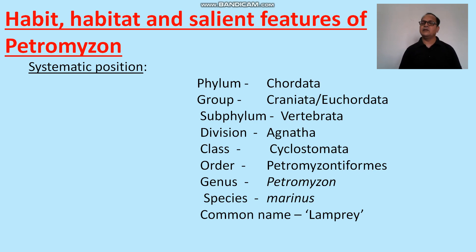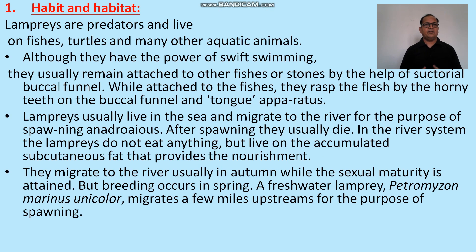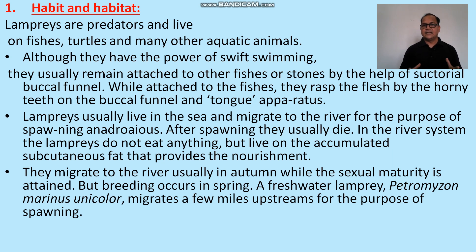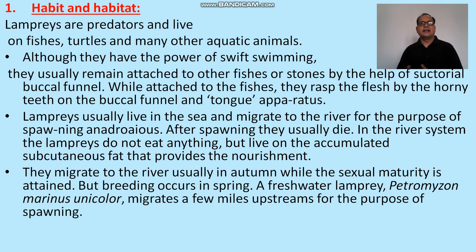Species marinus, common name lamprey. Lampreys are predators and live on fishes, turtles, and many other aquatic animals. Although they have the power of swift swimming, they usually remain attached to other fishes or stones by the help of the suctorial mouth. While attached to the fish, they rasp the flesh by horny teeth on the buccal funnel and tongue apparatus. Lampreys usually live in the sea and migrate to rivers for spawning — this is called anadromous migration. After spawning, they usually die in the river.